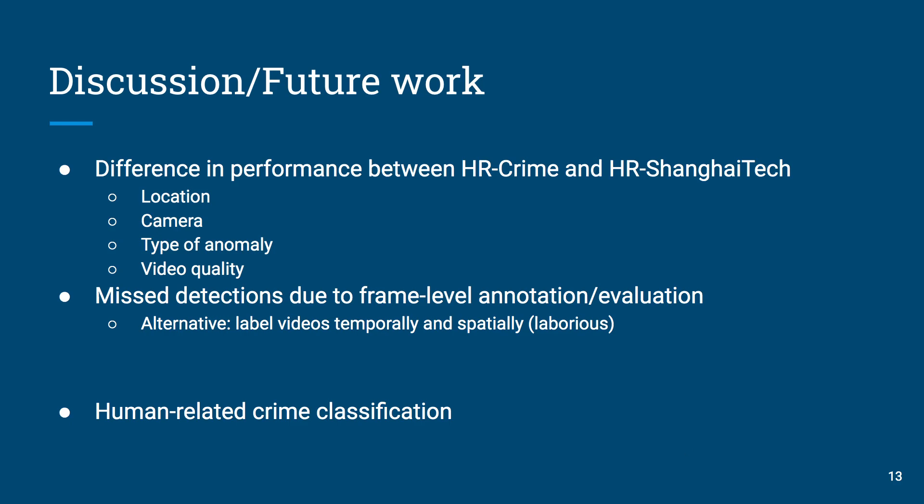Another factor that plays an essential role is the frame-level evaluation. Each video is annotated with ground truth labels indicating the window of an anomalous event. As we mentioned before, HR-Crime is quite complex, therefore an anomalous event can have multiple anomalous and normal events happening in the same video. However, predictions and evaluations are made per frame. An alternative might be to label the videos temporally and spatially to not only evaluate if a frame contains an anomalous event, but also to find the area where it occurs. This is a more accurate way of evaluating anomalous events, however it requires laborious work to annotate video frames manually.